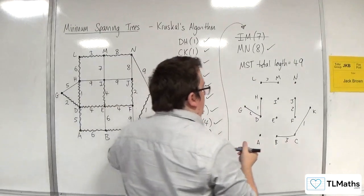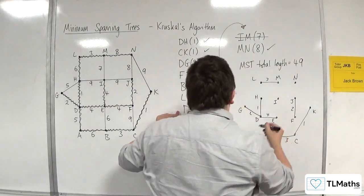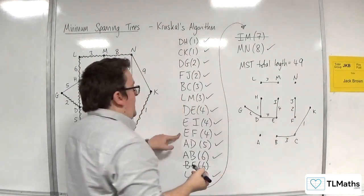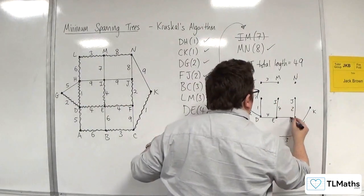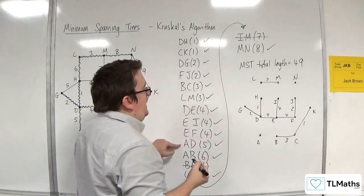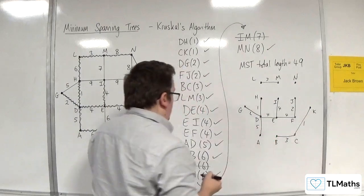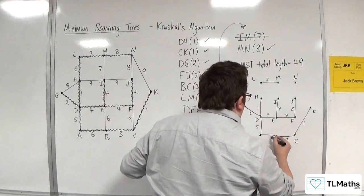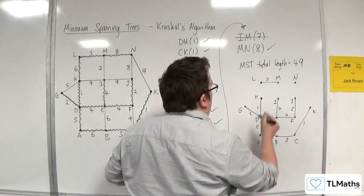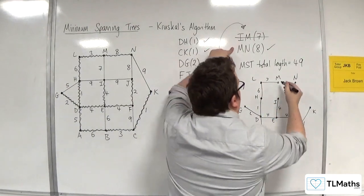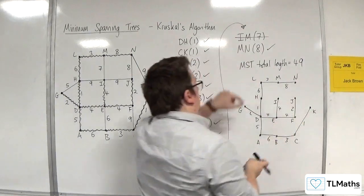DE is 4, EI is 4, EF is 4, AD is 5, AB is 6, LH is 6, and MN is 8.